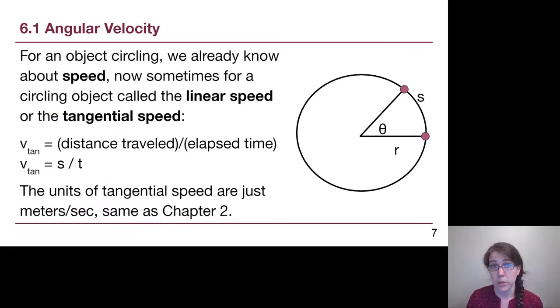For an object circling, we already know about speed from chapter 2, the idea that there is distance traveled over elapsed time. For a circling object, sometimes we refer to this as linear speed or tangential speed so that we can differentiate it from things that are going to show up in a couple of slides. The tangential tells us what direction this vector is pointing.